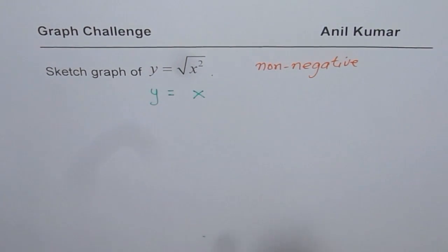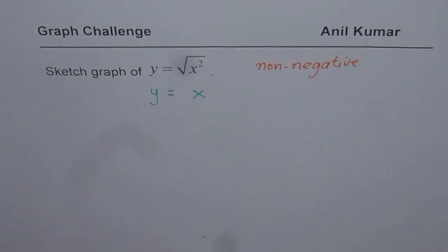If x is 0, it is 0. If x is not 0, then the square root of x squared will always be positive.